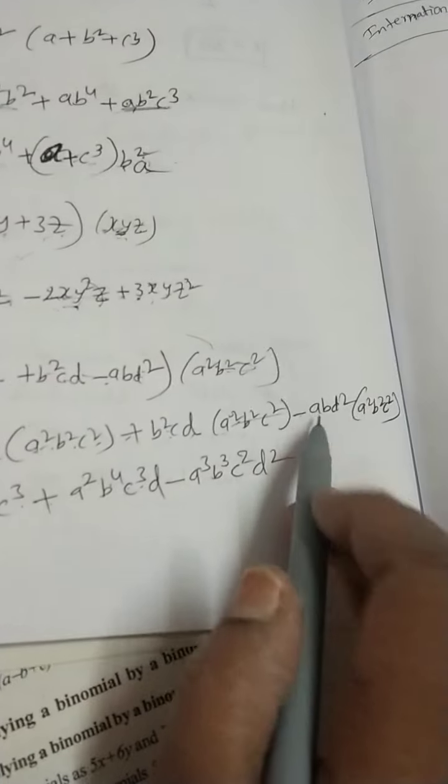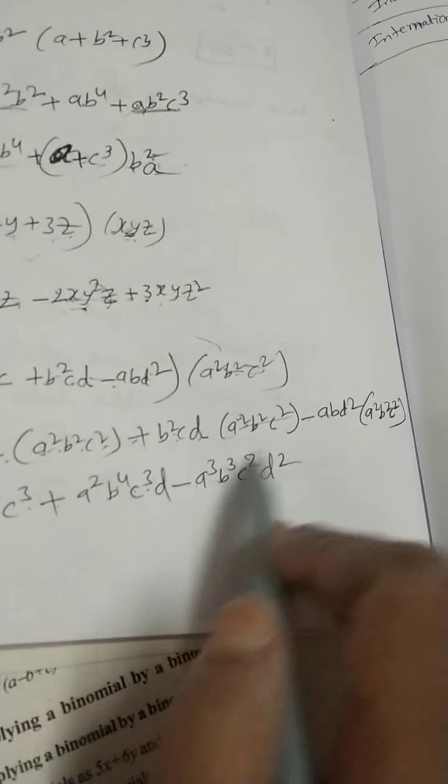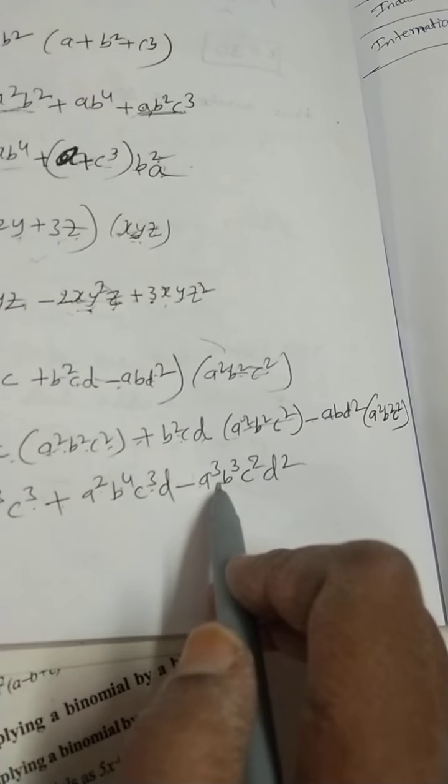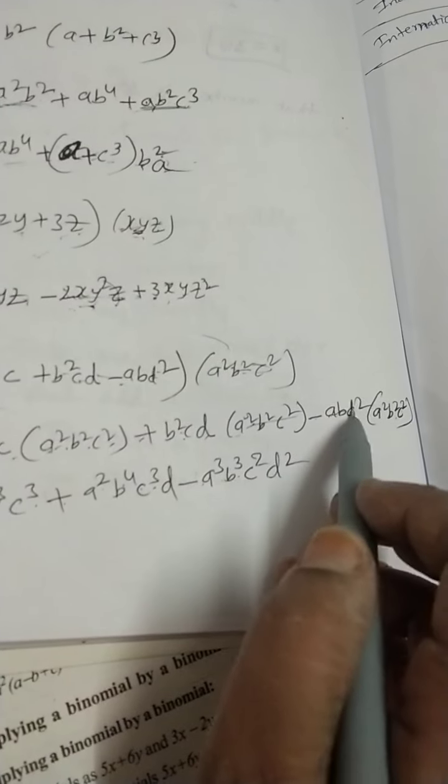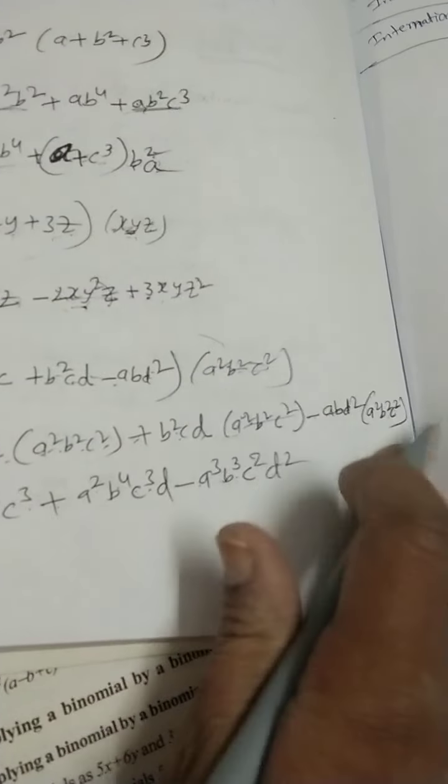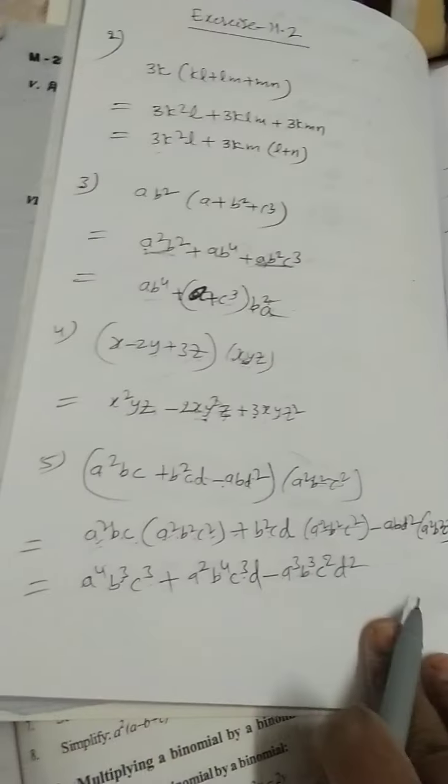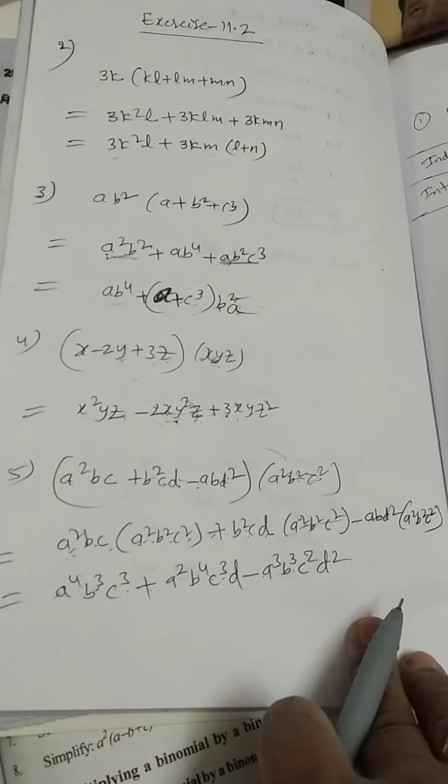Minus, here. A into A² is A³. B into B² is B³. Here, C² as it is. D² as it is. This is the first question solution.